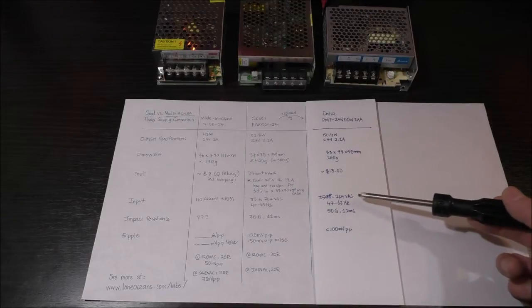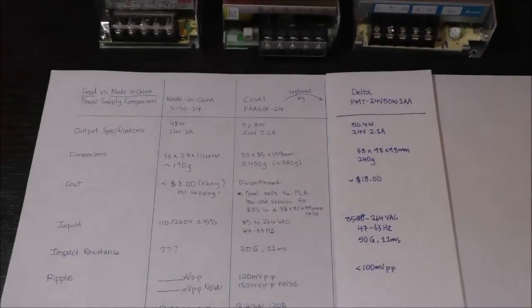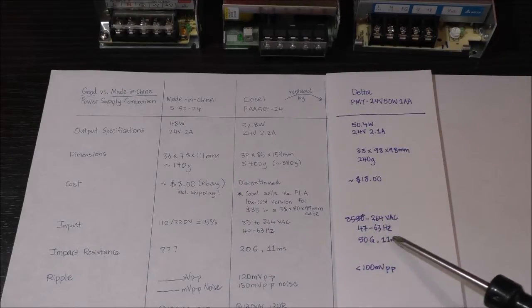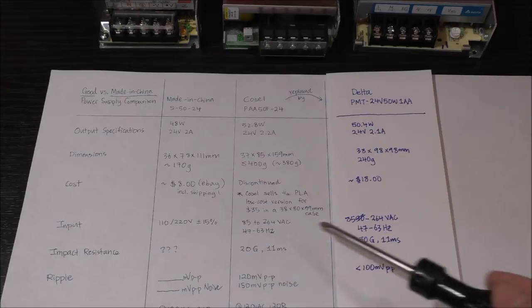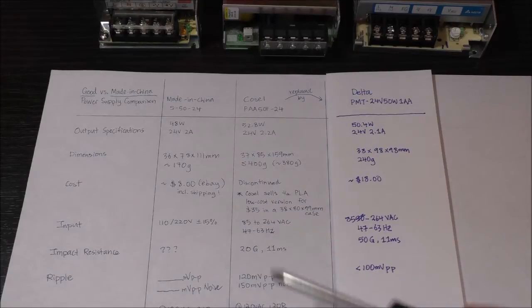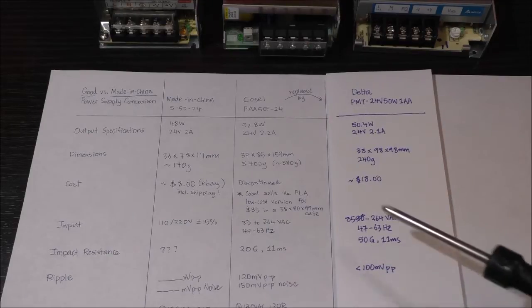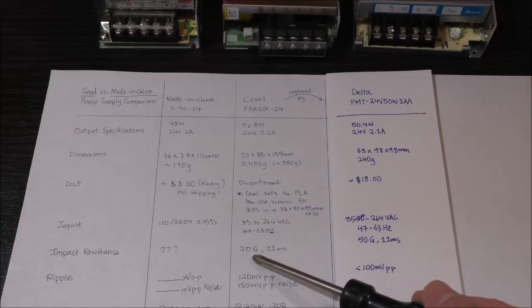As for the input rating, we can see that the Delta power supply is rated for 85 volts to 264 volts input, 47 to 63 hertz, and that is identical to the CoSel power supply. And according to the data sheet, it's actually capable of withstanding 50 Gs of impact for 11 milliseconds. And in this respect, it's actually better than the 20 G rating of the CoSel.